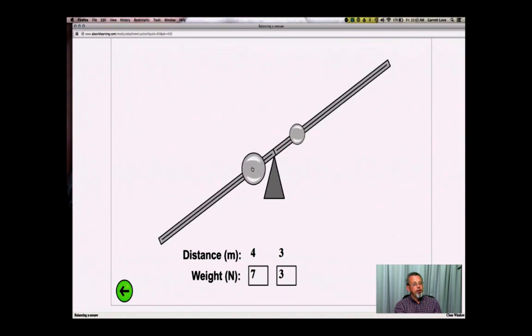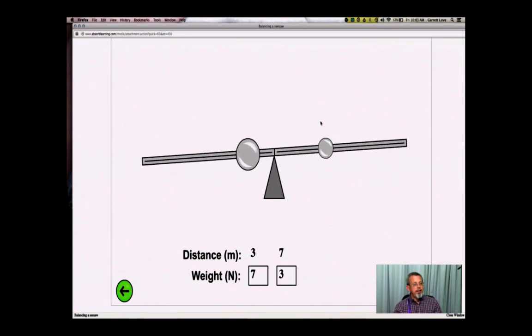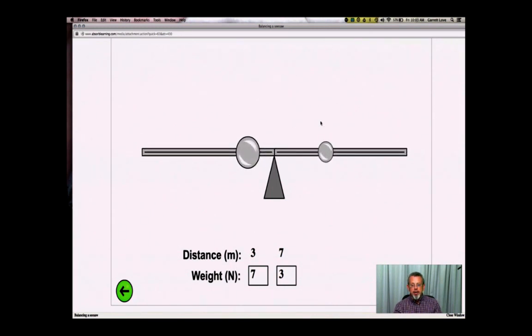So the heavier one goes to 3. And the lighter one goes to, let's see if I can actually get to 3 here. 3 and 7. Ta-da! Did anybody have any other numbers in balance?